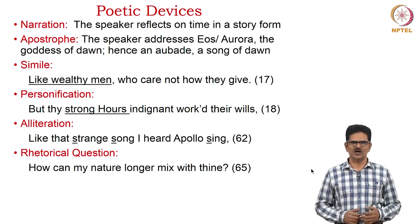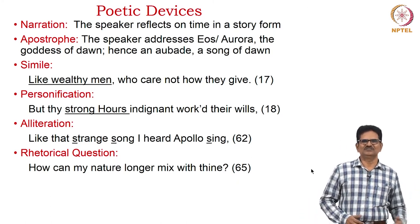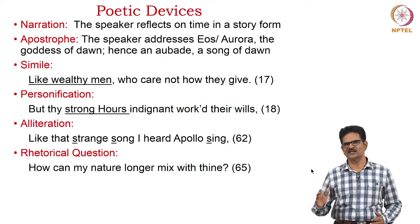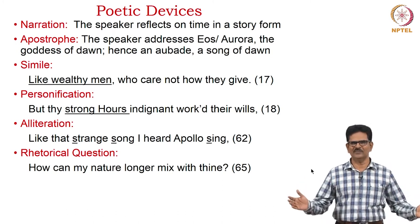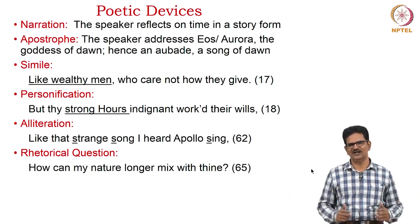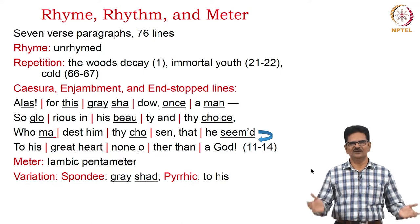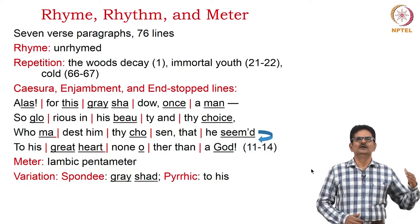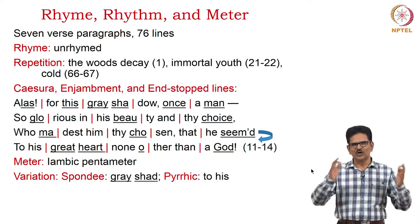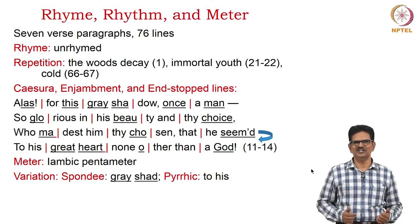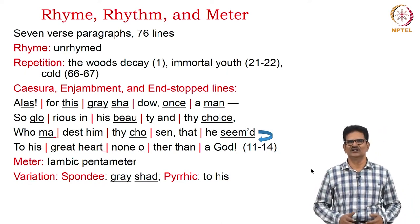Personification appears in 'thy strong hours indignant worked their wills.' Alliteration appears in 'like that strange song I heard Apollo sing' — saw, saw, sing. A rhetorical question: 'How can my nature longer mix with thine?' — human is human, divine is divine. We have rhyme, rhythm, and meter. There are seven verse paragraphs, totalling seventy-six lines. The whole poem is unrhymed; however, we have repetitions which add to the beauty — 'the woods decay, the woods decay,' 'immortal youth, immortal youth,' 'cold, cold,' and many others.